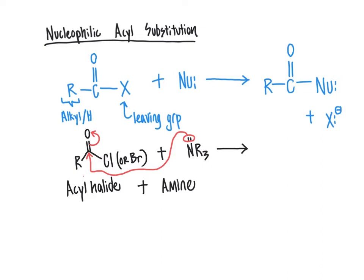Going through the mechanism: the nitrogen comes in and attacks the carbonyl carbon, forcing the pi bond up onto the oxygen to give us our tetrahedral intermediate. The intermediate has an oxygen anion directly bonded to the carbon, which is also bonded to the R group, the chlorine, and in red the new covalent bond linking it to the nitrogen of the amine — giving NR3 with a positive charge on nitrogen. In the second step, the carbonyl group reforms as the leaving group leaves.